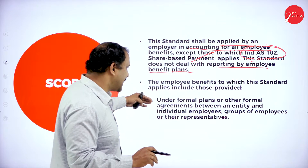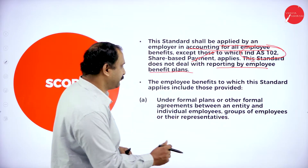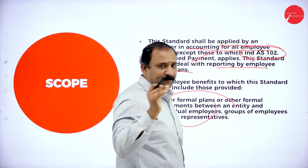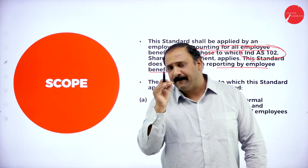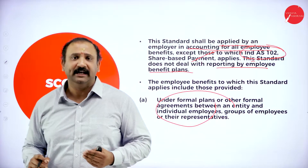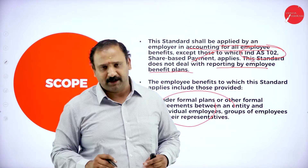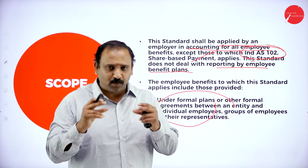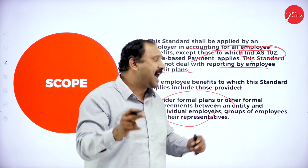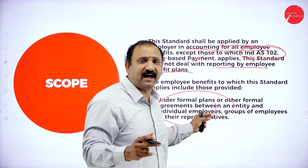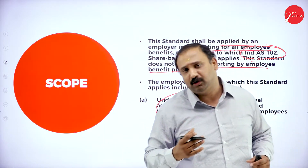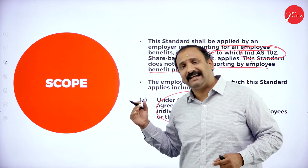The employee benefits to which the standard applies include those provided under formal plans or any other formal agreement between the entity and the employee. The moment an employee joins an organization, there is a formal agreement between the employer and employee stating the terms and conditions of working. For the amount of service or work done by the employee towards the organization, the employer has to pay certain benefits — this is all under a formal structure and formal agreement.